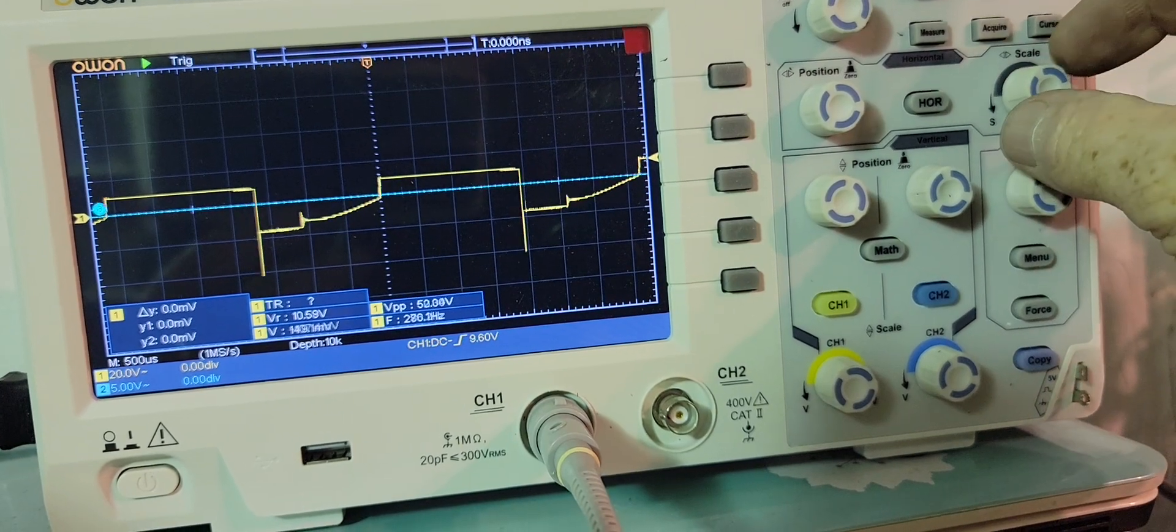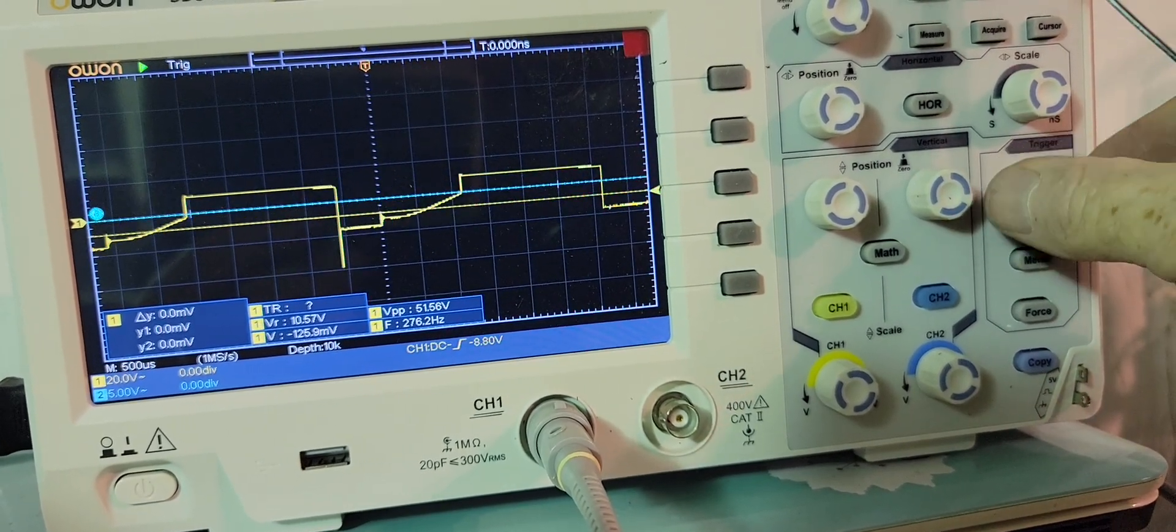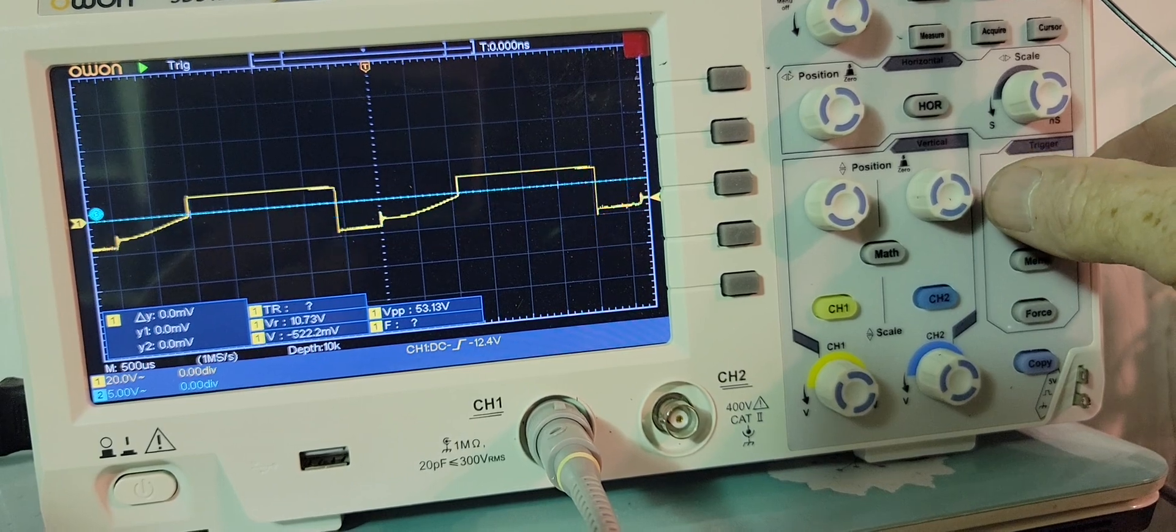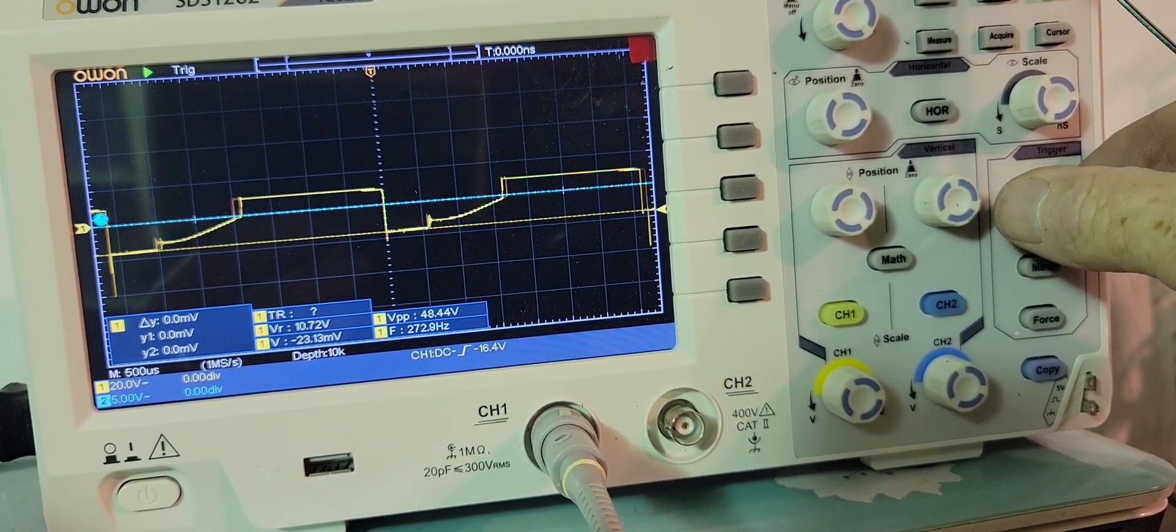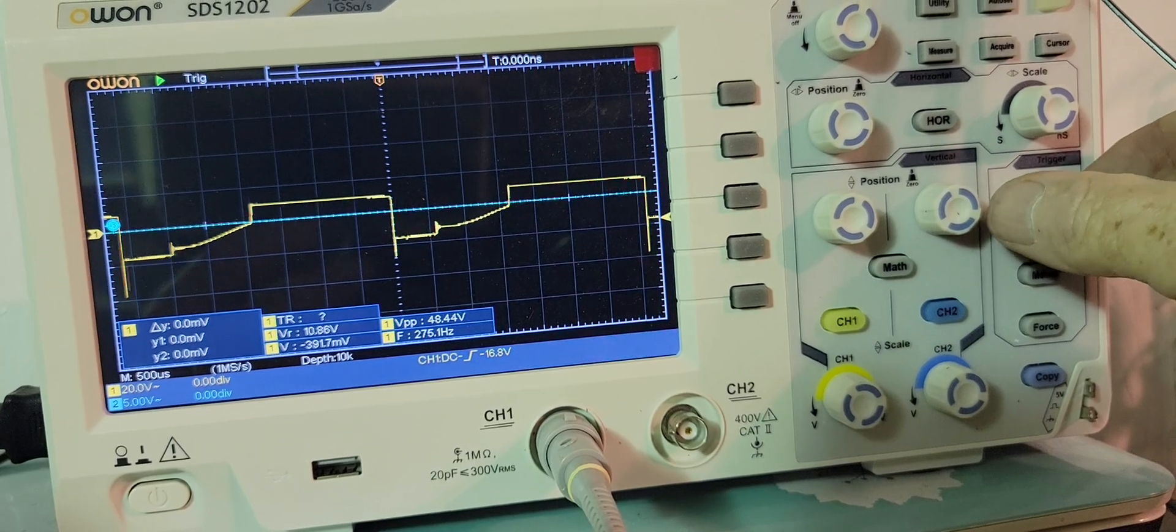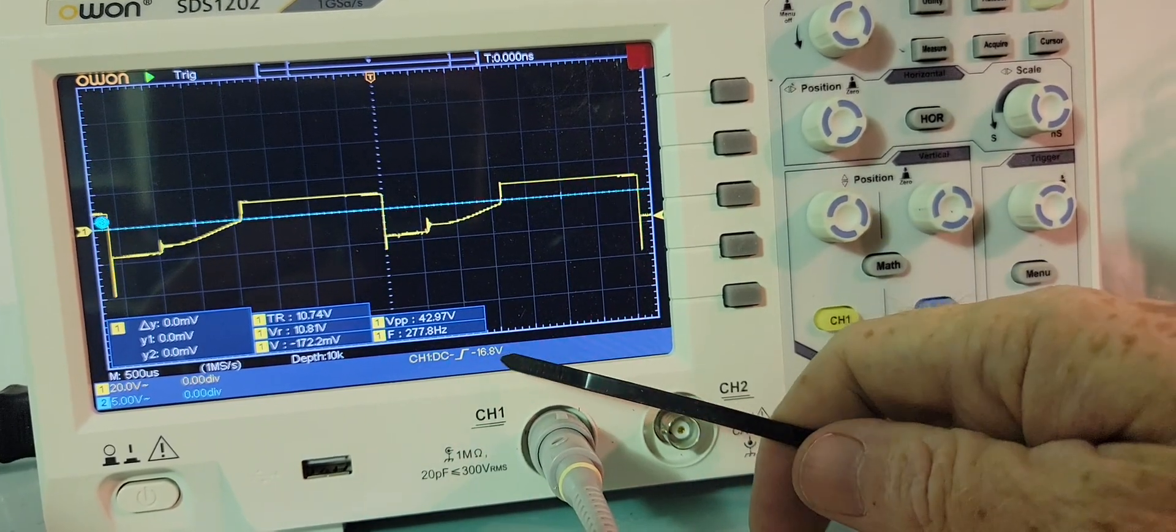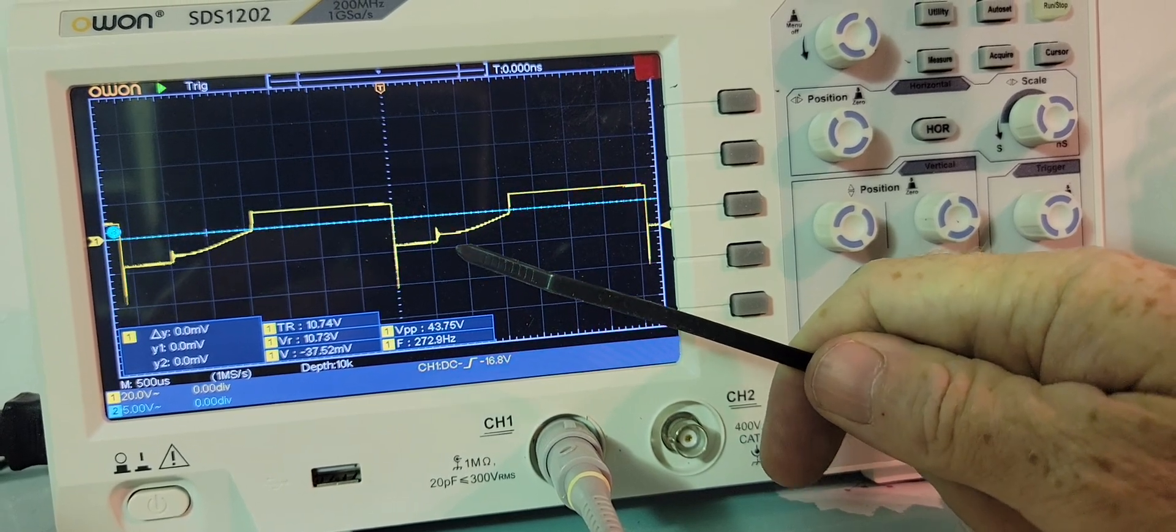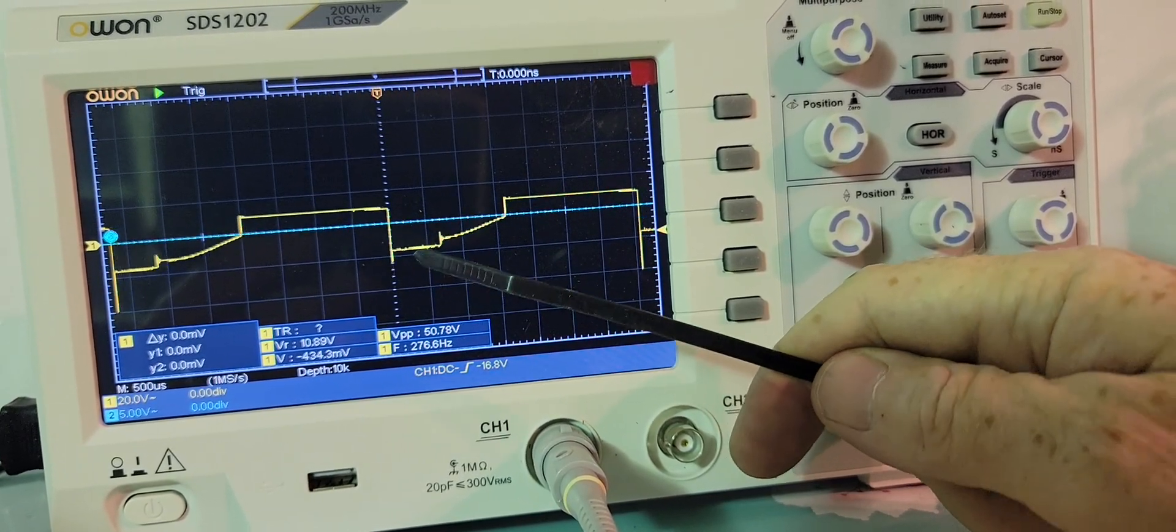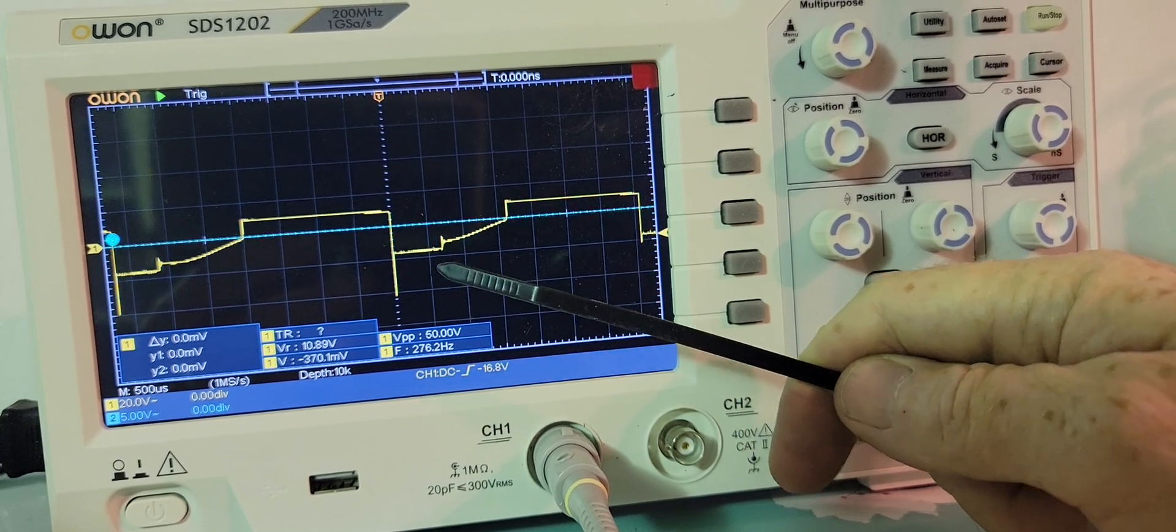So you can see here when I bring this down to measure that voltage that's going into the battery. It's 16.8 volts down here. That's where you get your current from going into the battery.